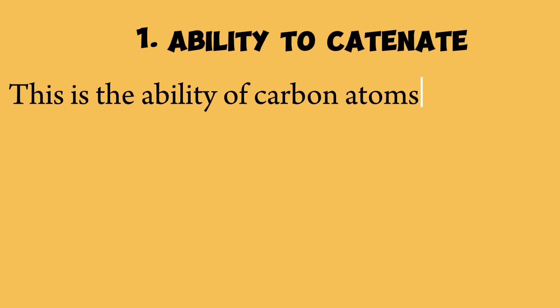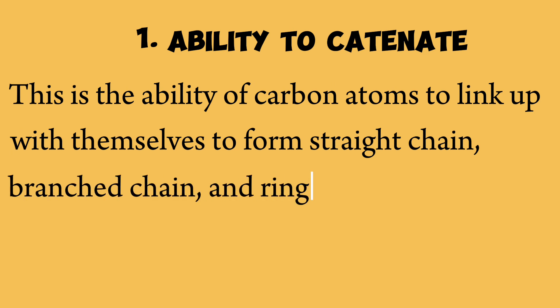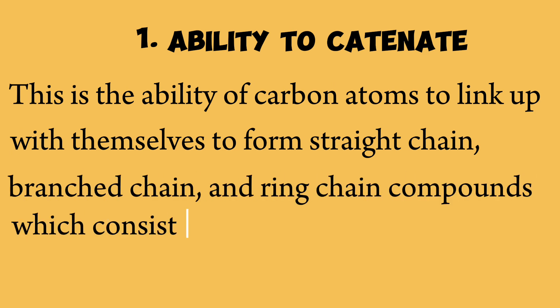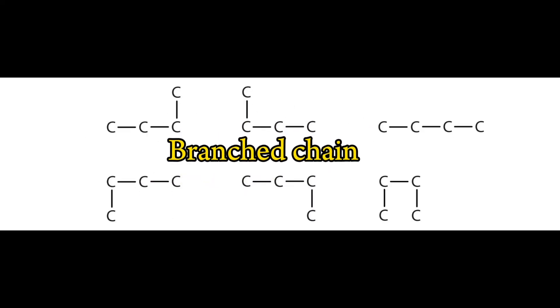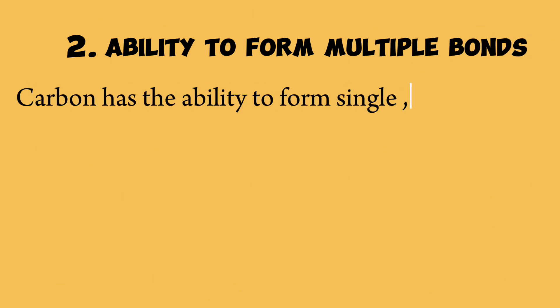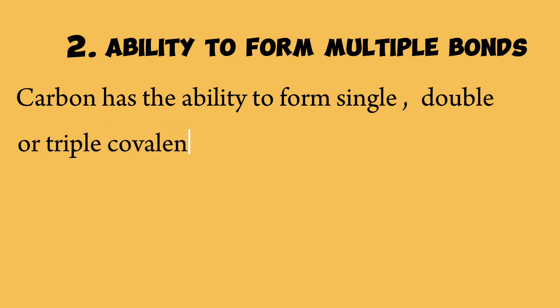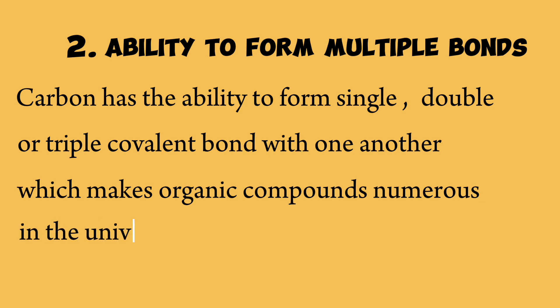Carbon in organic chemistry. First: the ability to catenate. This is the ability of carbon atoms to link up with themselves to form straight chain, branching, and ring chain compounds consisting of many atoms. Second: the ability to form multiple bonds. Carbon has the ability to form single, double, or triple covalent bonds with one another, which makes organic compounds numerous in the universe.